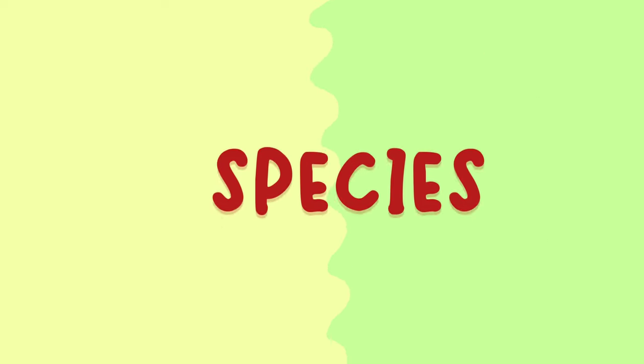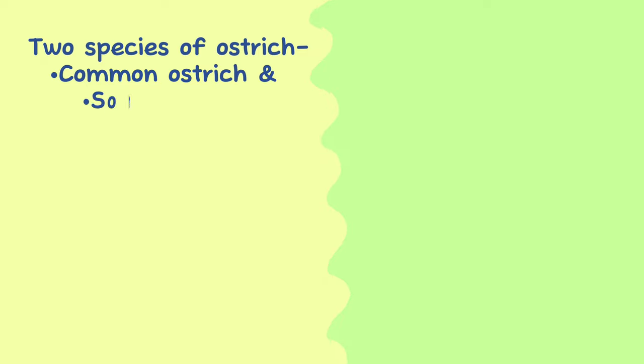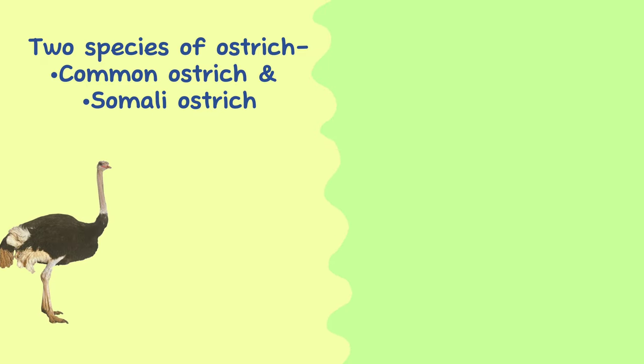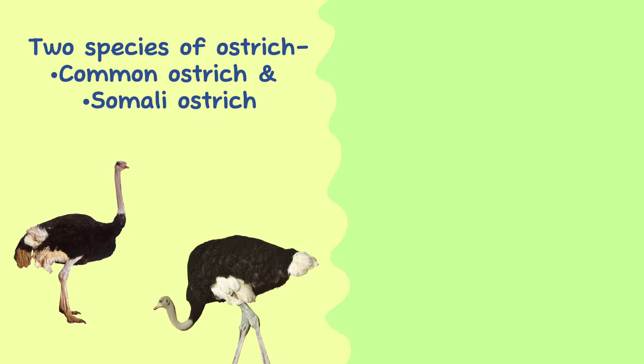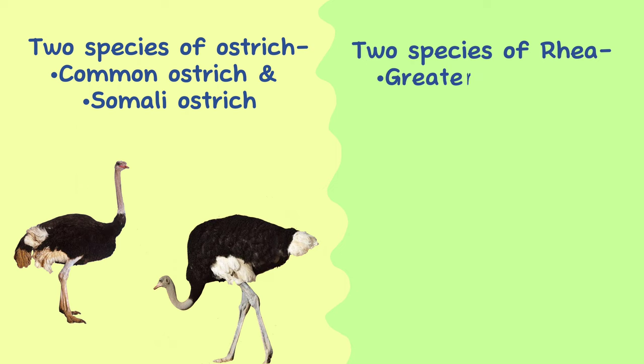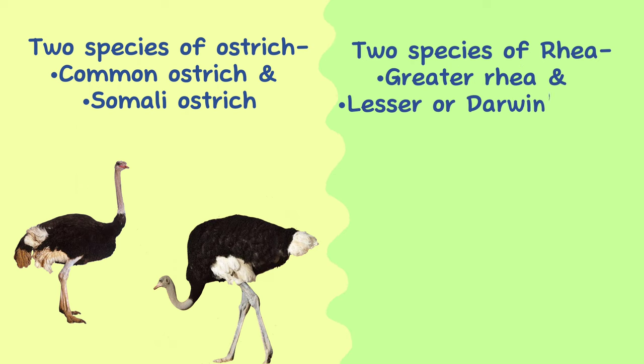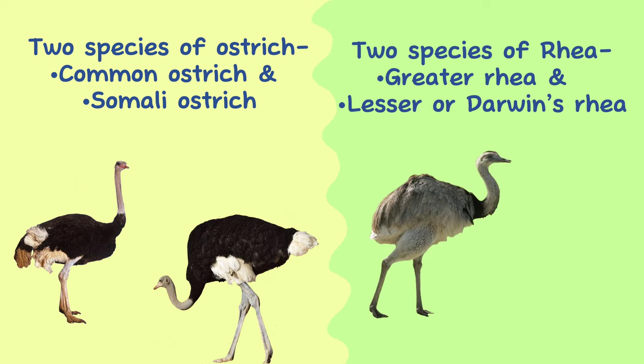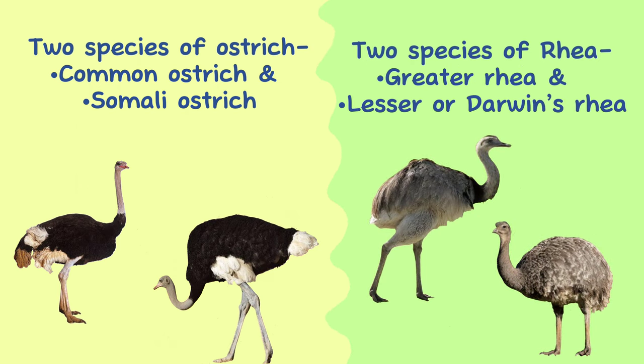Species. There are two species of ostrich: the common ostrich and the Somali ostrich. There are also two species of Rheas: the greater Rhea and the lesser, or Darwin's Rhea.